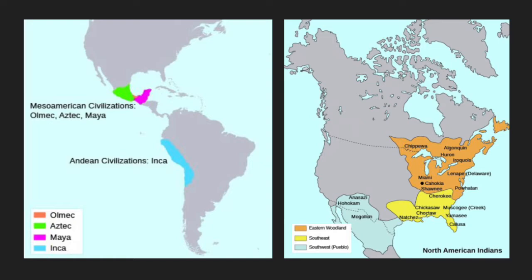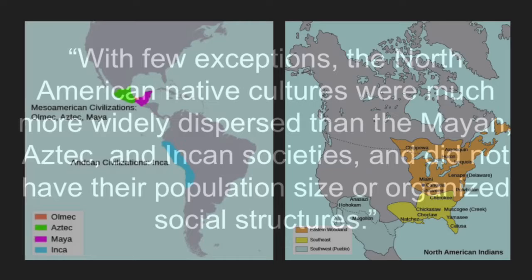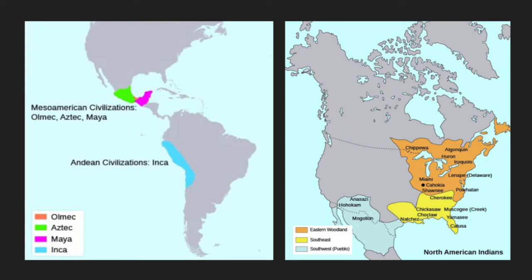Northern America was inhabited by Natives commonly referred to as American Indians, who were nomadic in nature and resided within tribes. According to U.S. History by OpenStax, with few exceptions, the North American Native cultures were much more widely dispersed than the Mayan, Aztec, and Incan societies and did not have their population size or organized social structures. While Mesoamerican cultures were erecting permanent public structures such as temples and roads and establishing institutions that encouraged population growth, Natives in Northern America lived in more personalized villages that were more temporary and equipped with just what was needed to survive on a daily basis.